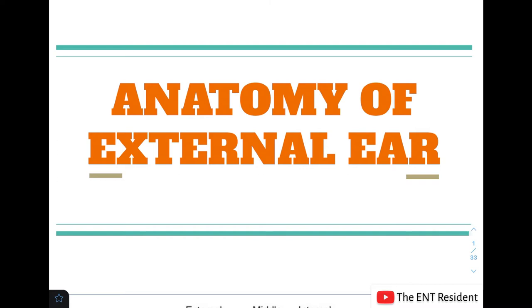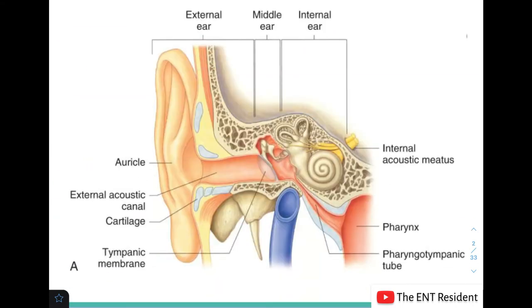Before I start talking about the external ear, I'll explain how we divide the ear into different parts. Looking at this picture, you can see the whole structure of the ear divided into three parts: the external ear, the middle ear, and the internal ear. The external ear begins at the level of the auricle or pinna and ends medially at the tympanic membrane.